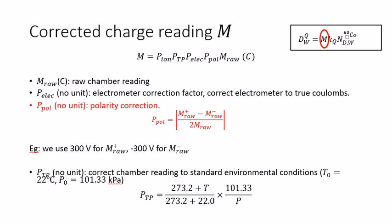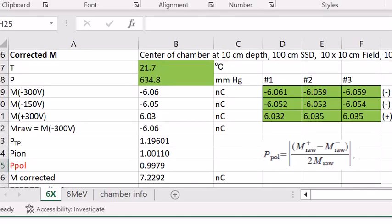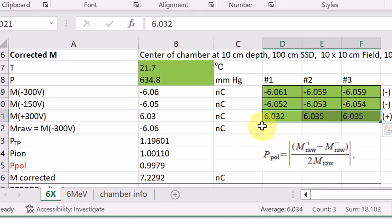Let's see an example for measuring the polarity factor for a 6NV photon beam. So first we place the chamber in water tank, and we bias the chamber to positive 300 volts right here, and we take three measurements averaging about 6.03 nanocoulomb.